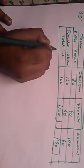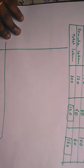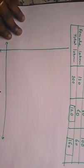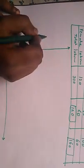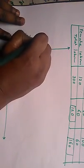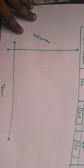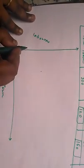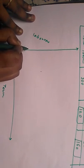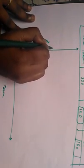Now we will draw the graph — the bar graph. The vertical axis represents labourers and the horizontal axis represents town. The scale goes: 40, 80, 120, 160, 200, 240, 280.